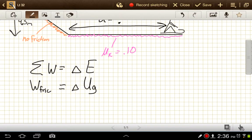So, the work from friction is going to be equal to the force from friction times the distance times the cosine of the angle between those two, and that's going to be equal to mass times gravity times the initial height.